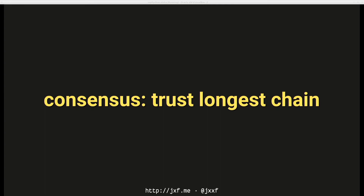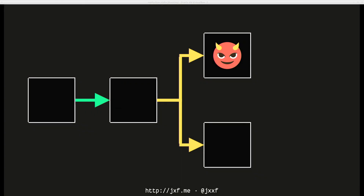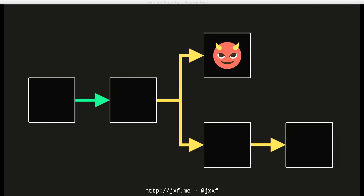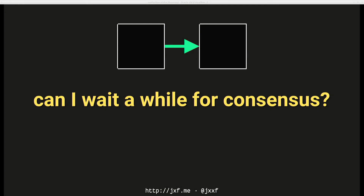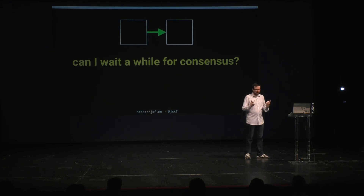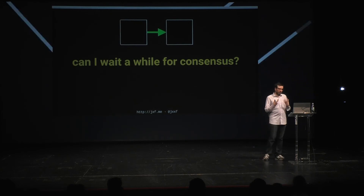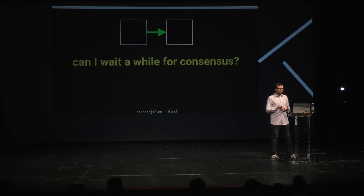Transactions with the highest fees are more likely to wind up in blocks — they get picked off the pile first. If we combine the signature of the previous block with our new block, we connect them in a chain going all the way back to the very first one: a blockchain. If we trust the longest chain, we know we're trusting the chain with the most consensus and the most work done. An attacker won't be able to produce blocks fast enough to catch up with everybody else.